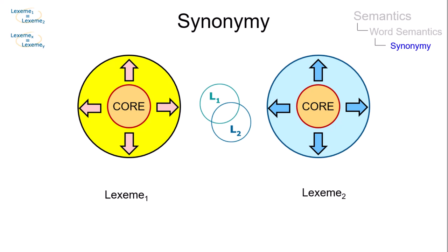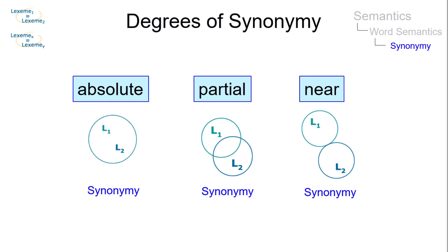Since intuitively some pairs of synonyms share more features than other pairs, degrees of synonymy ranging from absolute to near synonymy can be defined.